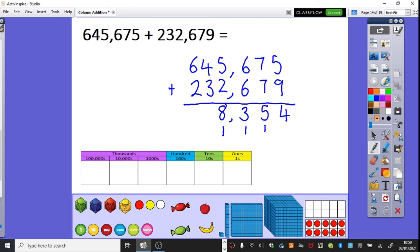40,000 and 30 thousands. Four tens of thousands and three tens of thousands is 70,000. Seven tens of thousands. And finally, 600,000 add 200,000 is 800,000. So we've got the answer there of 878,354.